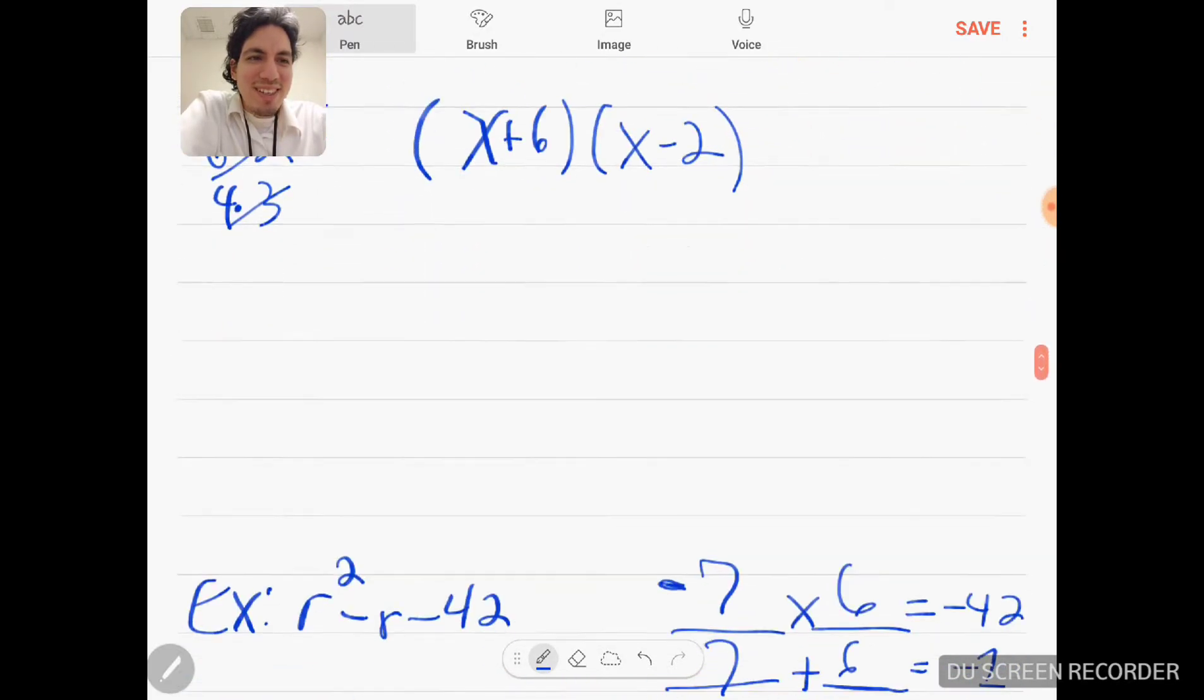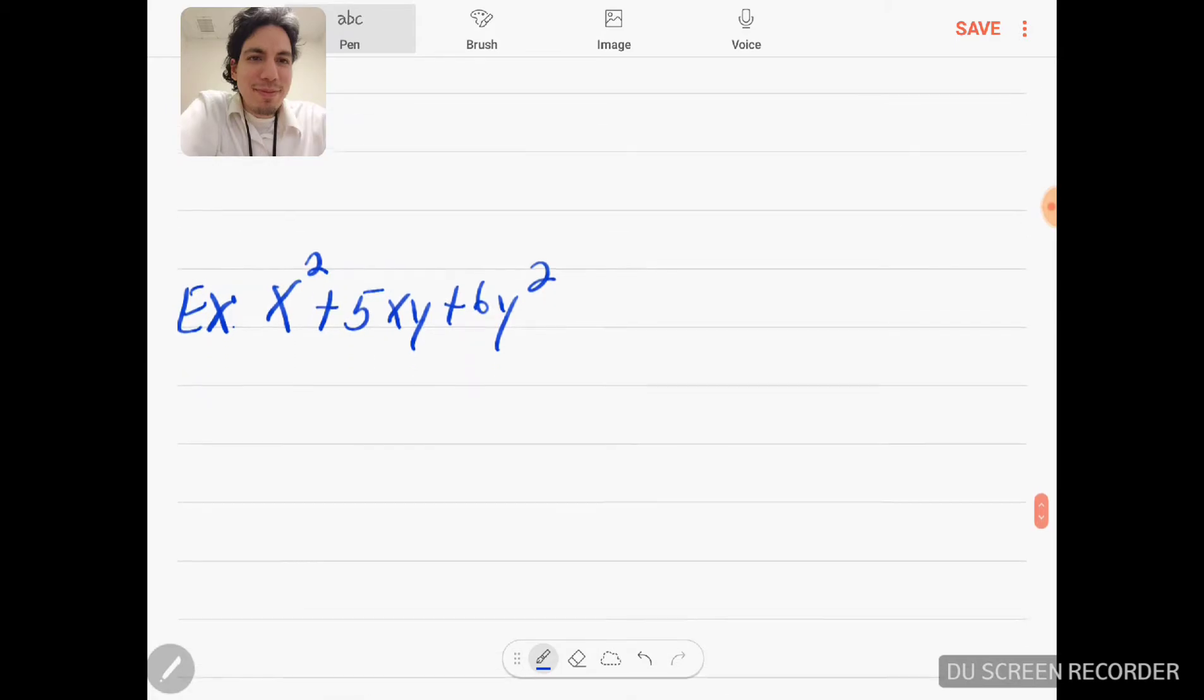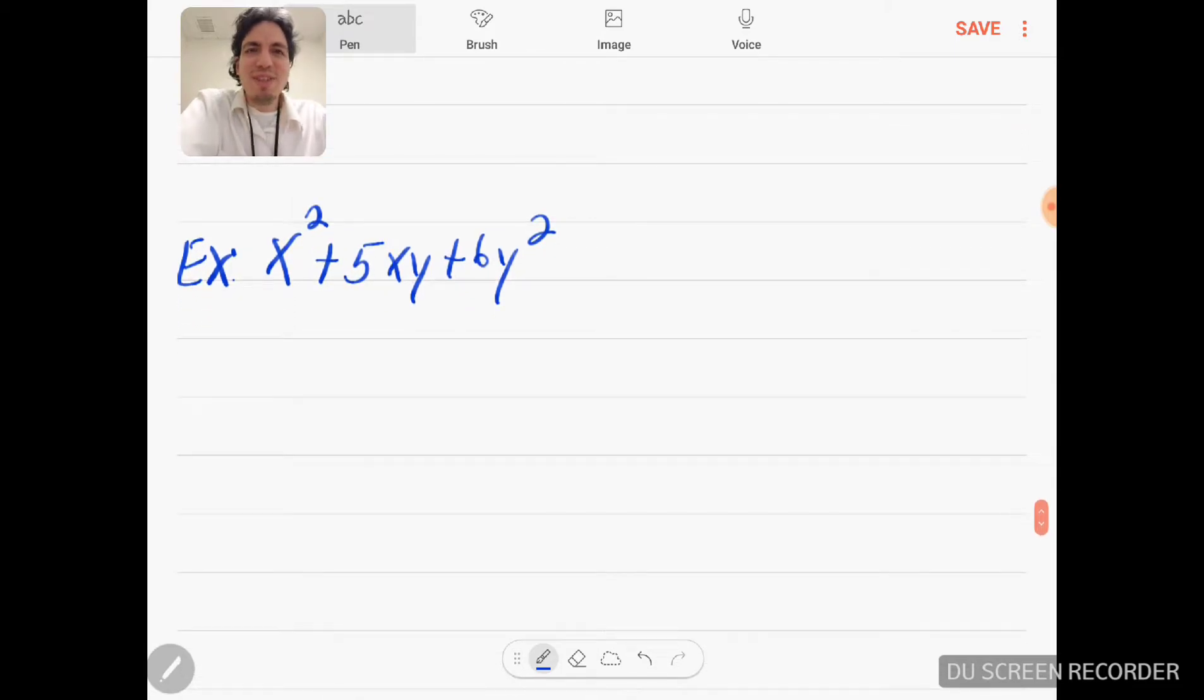Okay, I thought I changed the letters and I didn't change that one. All right, ooh, this is a messy one. Holy crap, this is a messy one. All right, let's think. We got to think of two numbers when we multiply them gives us 6y squared.